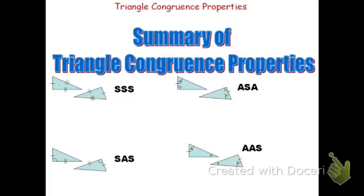Take a moment and notice where the side is in ASA and AAS congruence. Both of those congruence properties use two angles and one pair of congruent sides, but it is the position of the side that tells me the difference in the properties. In angle-side-angle, the side is in between the angles, and in angle-angle-side, the side is not in between the angles.